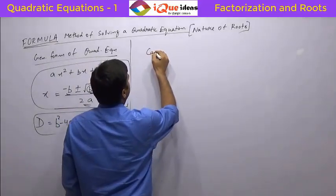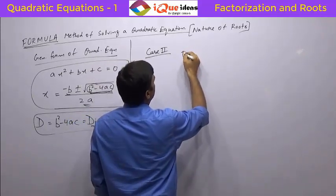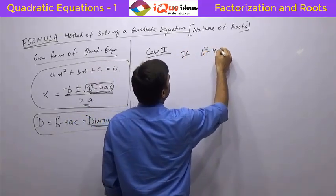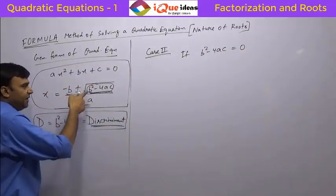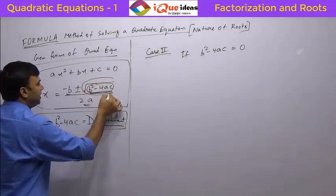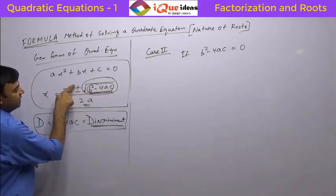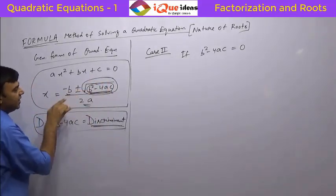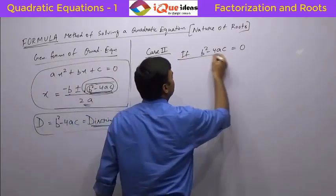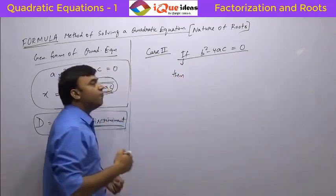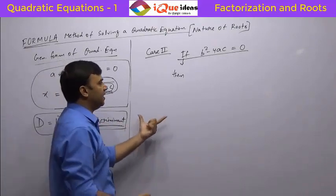Now let us take the next case — case 2. This is a very interesting one. If b squared minus 4ac is equal to 0, then this whole thing goes away completely. The plus-minus will not make any sense; the only thing that remains is minus b divided by 2a. So if b squared minus 4ac equals 0, there is only one root, because the square root part becomes 0, and plus and minus separately will not give any different roots.